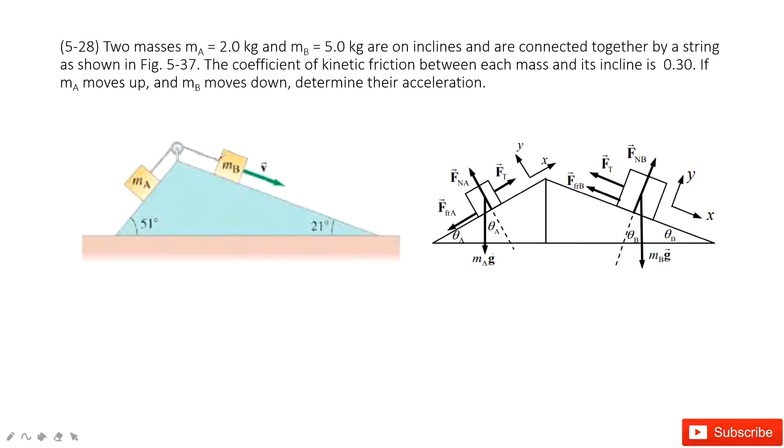In this system, it looks a little bit complicated. We have two objects A and B, and then we need to find the acceleration for this system. So how can we do that?